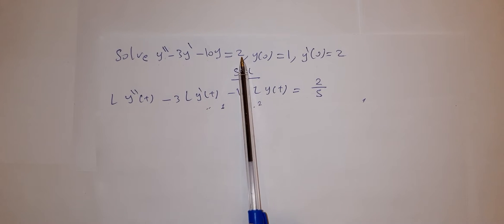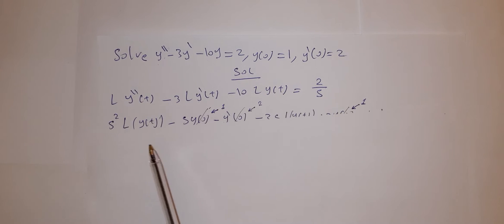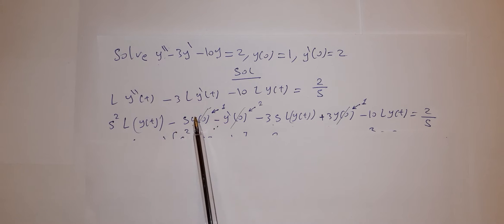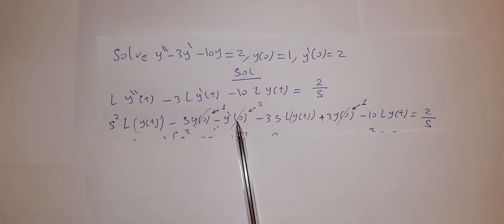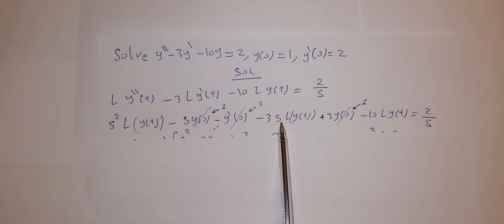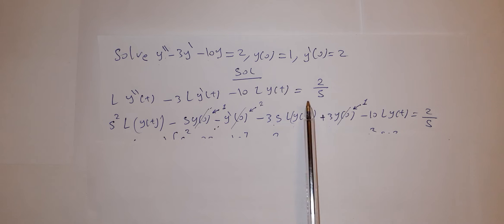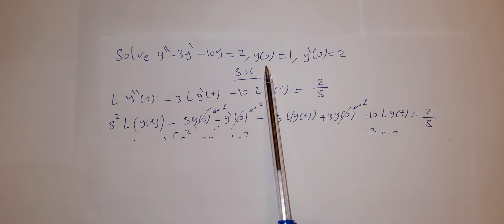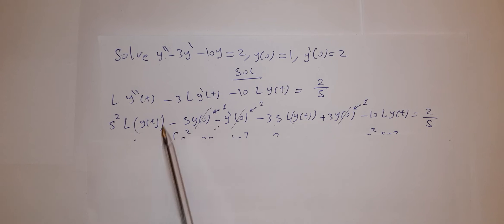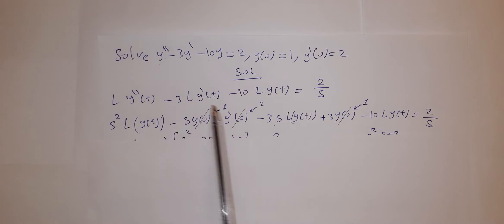The Laplace of 2 is 2 over s. Laplace of y double prime equals s squared times L{y(t)} minus s·y(0) minus y'(0). And Laplace of y prime equals s·L{y(t)} minus y(0). Now substitute the initial conditions y(0) and y'(0), and take L{y(t)} as a common factor.